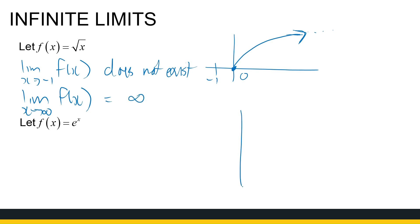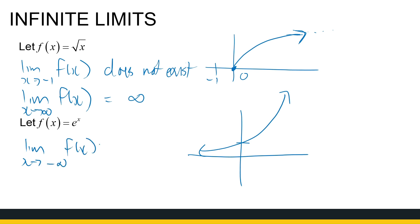And for e to the power x: as x approaches minus infinity, there's an asymptote and y goes to zero. But as x goes to infinity, e^x keeps climbing much faster. So e^x climbs way faster than √x, but both of those go towards infinity. That's the concept of infinite limits.